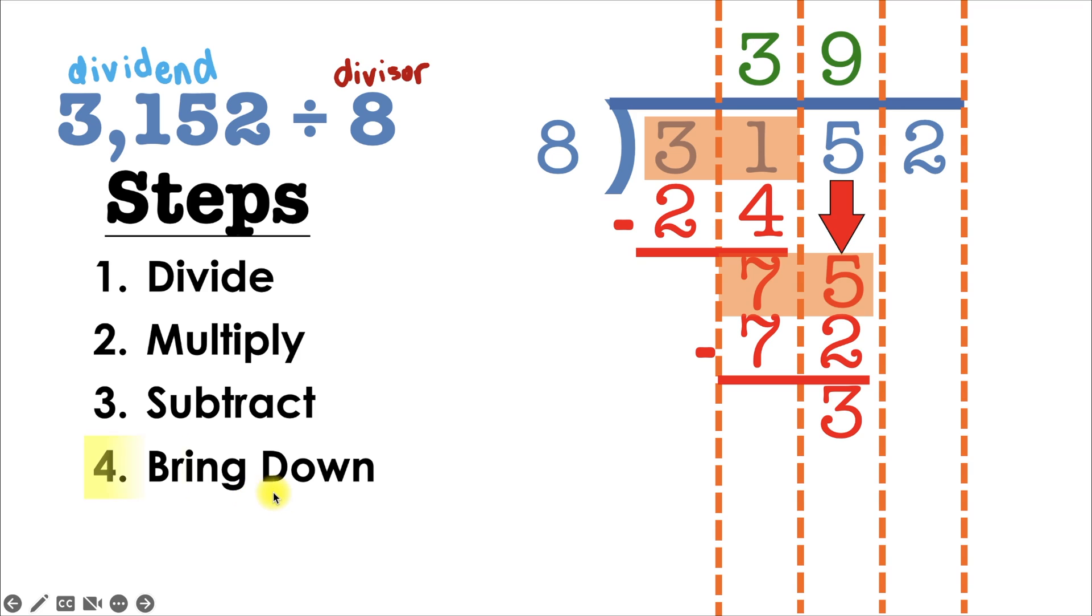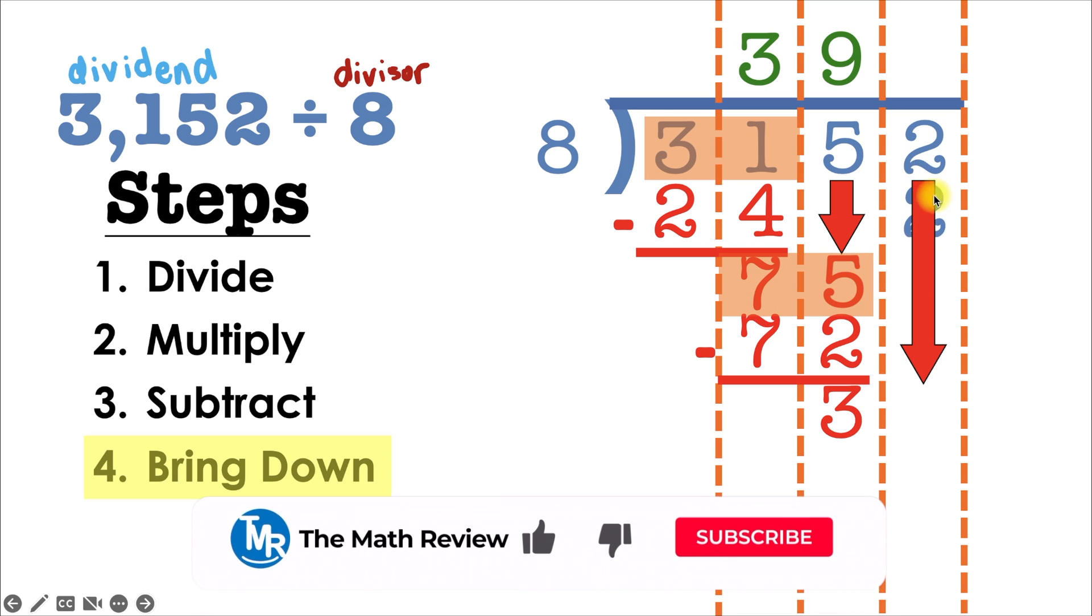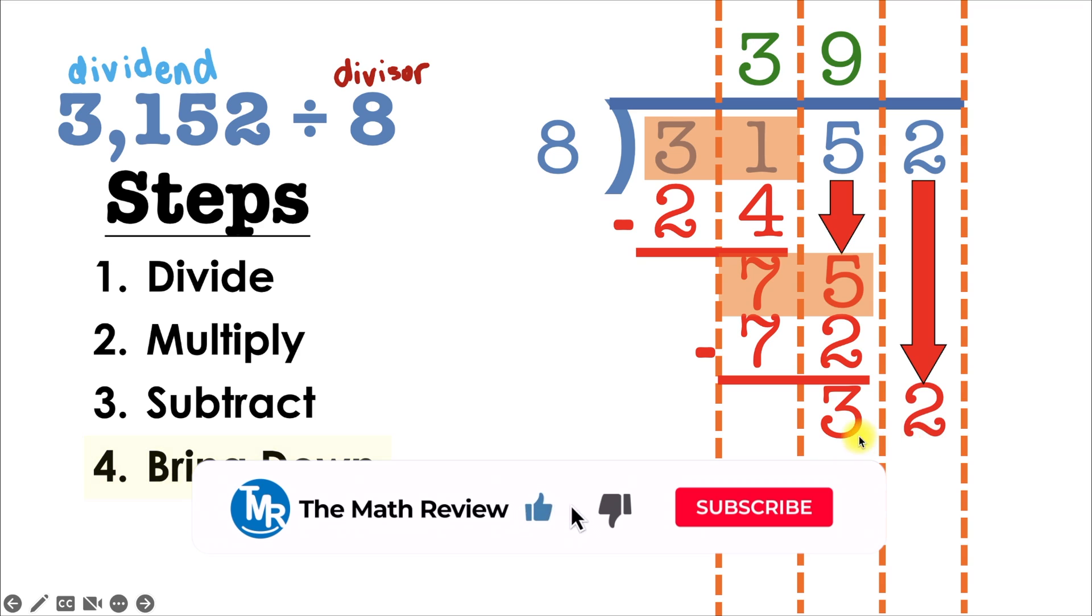And next, we'll bring down what's in our column to the right. In this case, that's 2. So we're going to bring that 2 down. And that's going to give us our new number here, which is 32.